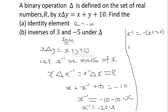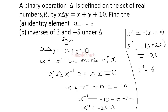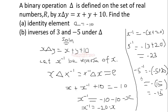Now finding the specific inverses: the inverse of 3 equals negative 3 minus 20, which gives negative 23. The inverse of negative 5 equals negative of (negative 5 plus 20), which equals negative of 15, giving negative 15. Therefore the inverse of 3 is negative 23 and the inverse of negative 5 is negative 15.